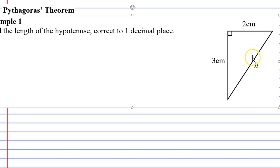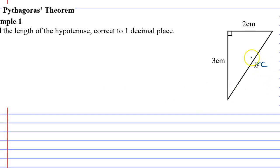So we want to find the hypotenuse correct to one decimal place. A good place to start is just to label your C, B and A. So C is always your hypotenuse and your A and B are the other two sides.